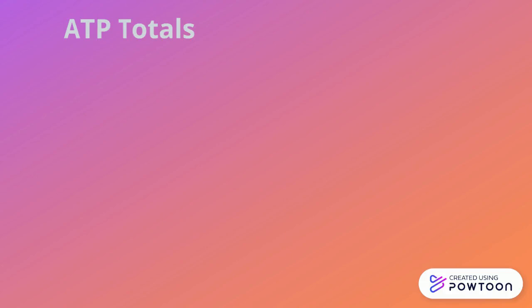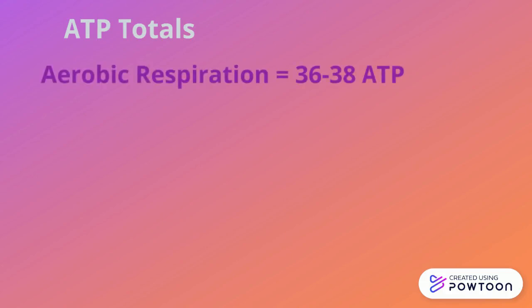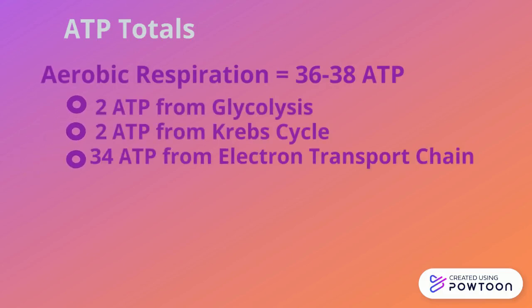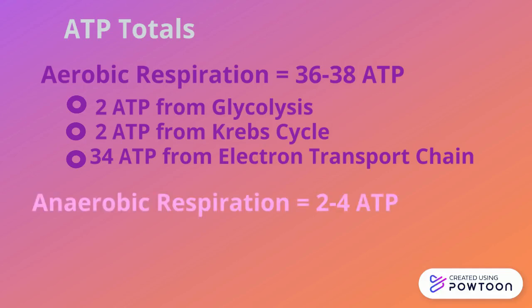ATP totals: aerobic respiration yields 36 to 38 ATP — 2 ATP from glycolysis, 2 ATP from the Krebs cycle, and 34 ATP from the electron transport chain. In turn, anaerobic respiration only yields 2 to 4 ATP. That's why our body prefers cellular respiration.